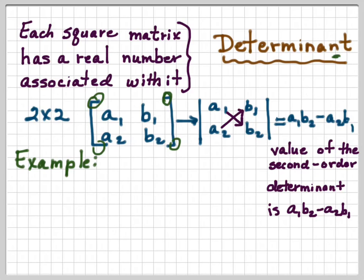So let's take a look at an example. If I have the determinant 5, 6, 7, 8, I'm going to multiply 5 times 8, which is 40. And then I'm going to subtract 6 times 7, which is 42, giving me negative 2.